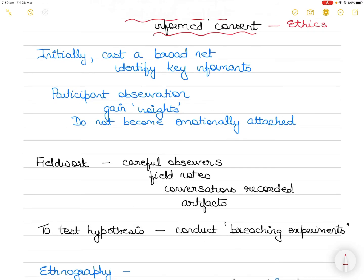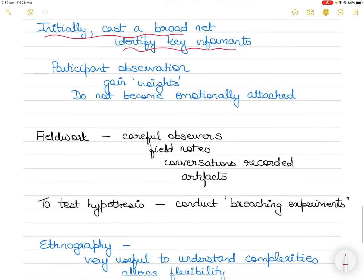Initially researchers will cast a broad net. That means intermingling with everyone and getting an overall sense of the social and cultural context. Gradually they identify key informants who can provide information and insight relevant to the research question and facilitate contact with other helpful individuals.